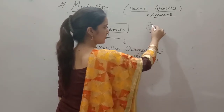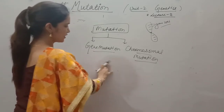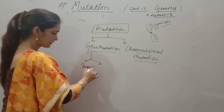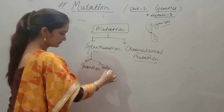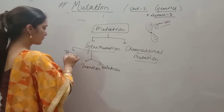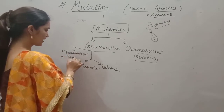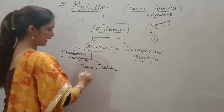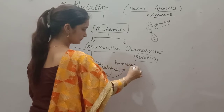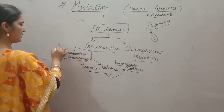Genes are present on chromosomes at specific loci. Gene mutation may be due to insertion, deletion, transition, or transversion. If insertion or deletion of bases occurs, it may cause frame-shift mutation. If mutation is caused by transition or transversion, it may result in point mutation.